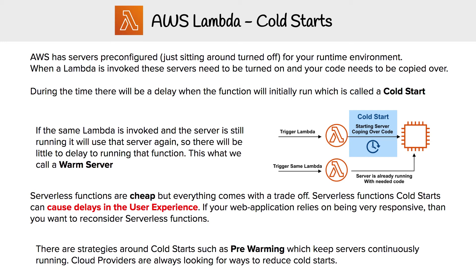There are ways around cold starts, which is called pre-warming. You can invoke a function prematurely so that when someone actually uses it, it's always going to stay warm. Or you can take a Lambda and give it more responsibility so that more things are passing through it, keeping it warm more consistently.